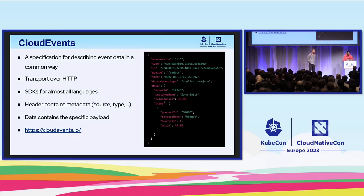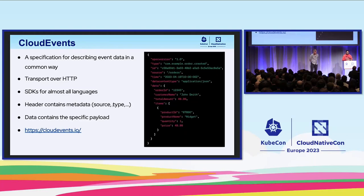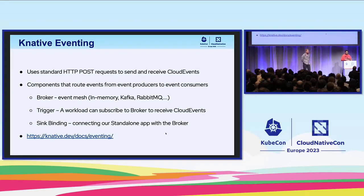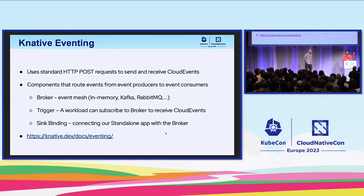When we say CloudEvent, you can specify the type of endpoint it needs, what type of content it has, and pass the exact format — name, quantity, price — along with a payload. CloudEvents has an SDK available across languages from Golang to Node.js. For eventing, there are three specific types: a broker as an event mesh (in-memory for this demo, but configurable with Kafka or RabbitMQ), a trigger for workloads subscribed to receive CloudEvents, and a sink binding that connects your standard application to the broker.